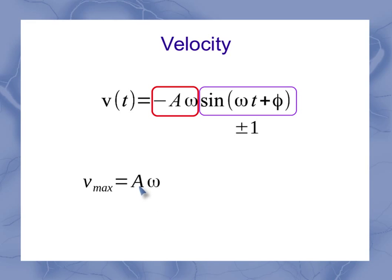And notice in this case, the maximum actually occurs when sine is negative 1. Therefore, the two negatives are canceling each other out. And my minimum of minus A omega is going to occur when sine is plus 1.